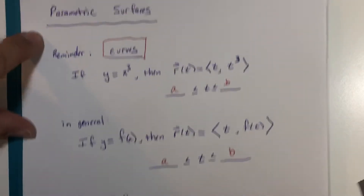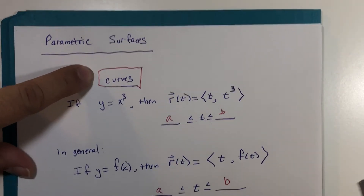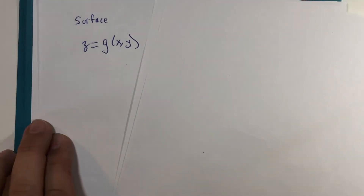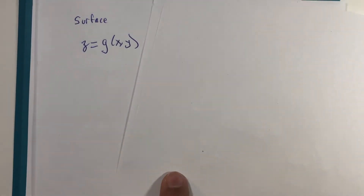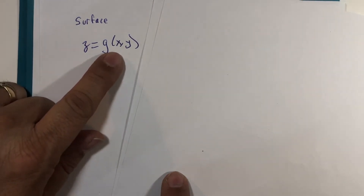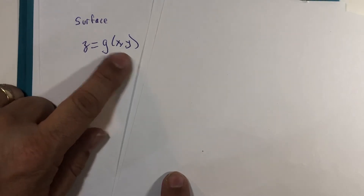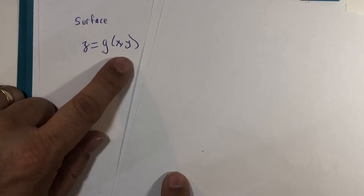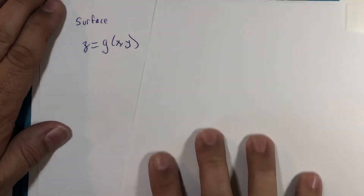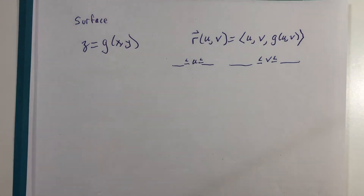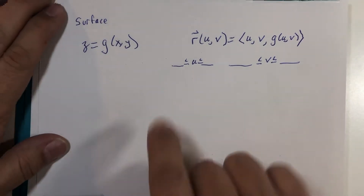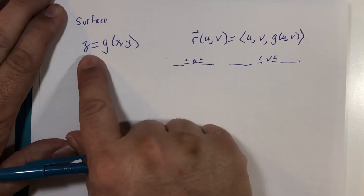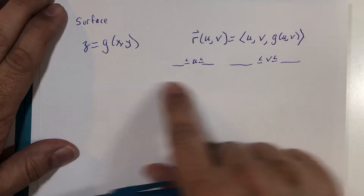Now I said surfaces — so far this has just been a quick review of curves. Let's suppose we take a surface z equals g of x, y. In our curves we replaced x with t and then the output became the function of t. Well, I have two inputs now. The way it's defined in many cases is as a two-variable input. Remember this has three variables in total: two inputs and an output — x, y, and z.